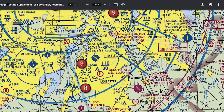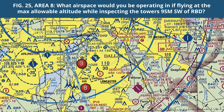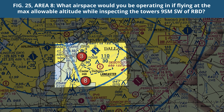Question three also refers to figure 25, area eight. What airspace would you be operating in if flying at the maximum allowable altitude while inspecting the towers nine statute miles southwest of Dallas Executive Airport? We're looking at the same airport here. We start at the airport icon and go nine statute miles southwest — and we're probably looking at these tower icons right here.